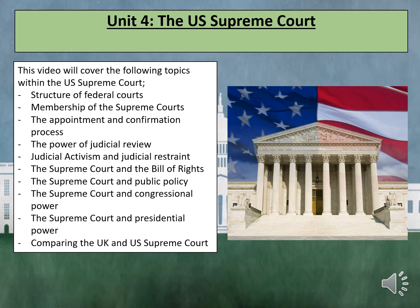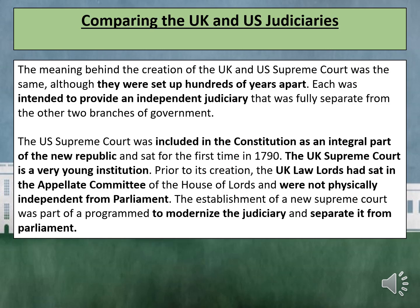This video covers topics within a Supreme Court revision, comparing the US Supreme Court to its UK counterpart. The meaning behind the creation of both courts was the same, although they were set up hundreds of years apart. Each was intended to provide an independent judiciary fully separate from the other two branches of government. The US Supreme Court was included in the Constitution as an integral part of the new republic and sat for the first time in 1790.